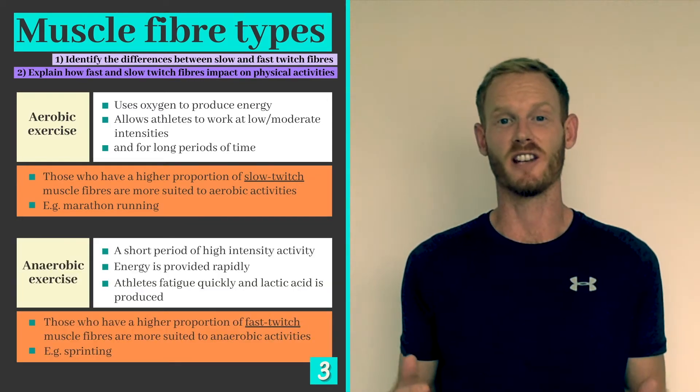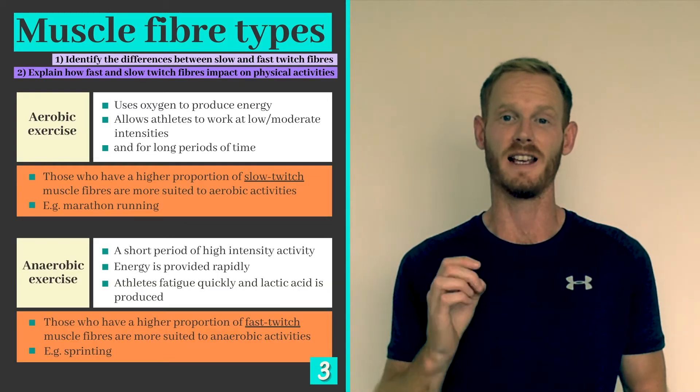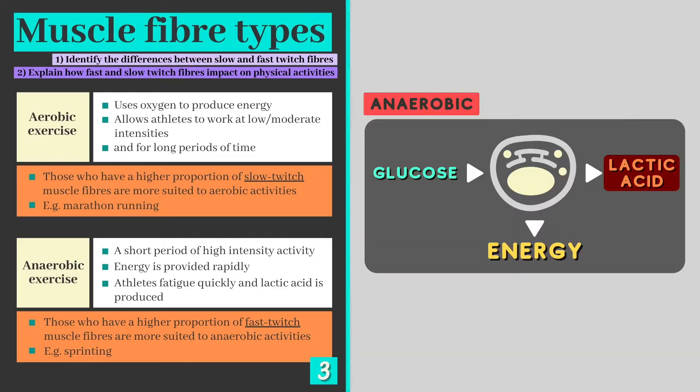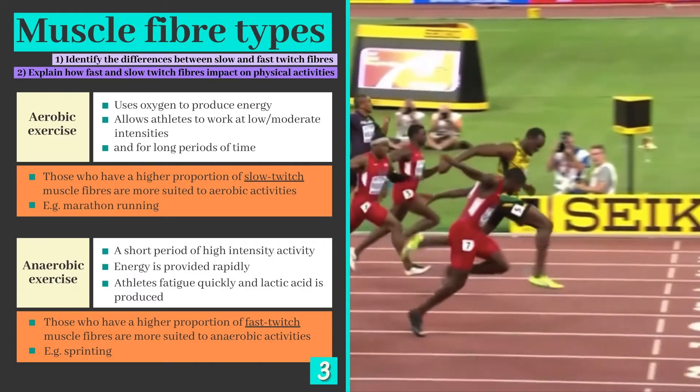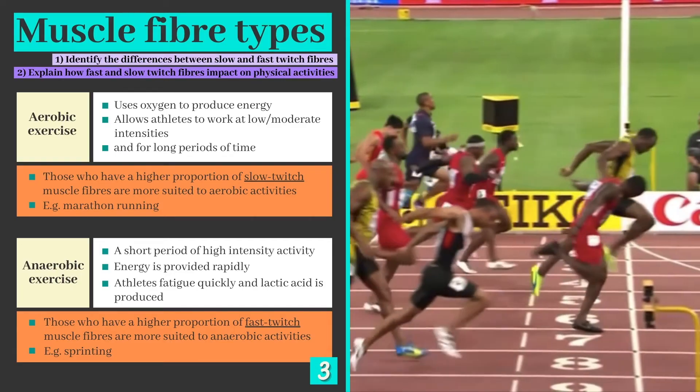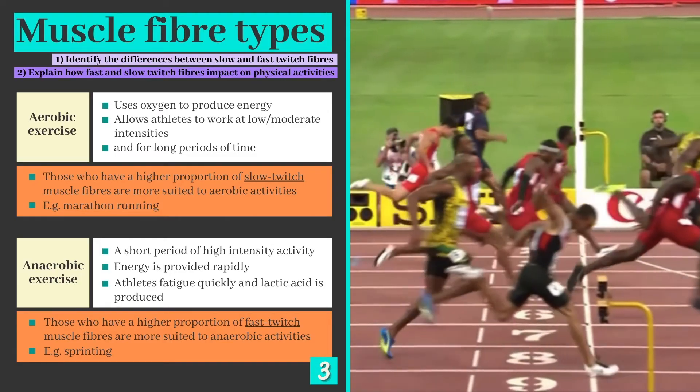Anaerobic exercise on the other hand is a short period of high intensity activity. Energy is provided quickly but athletes soon tire as fuel sources run out and lactic acid is produced as a by-product. Those who have a higher proportion of fast twitch fibers are therefore more suited to anaerobic exercises including sprinting.